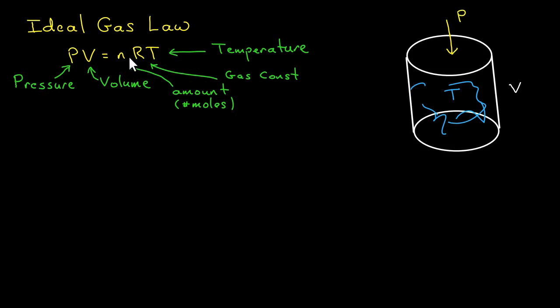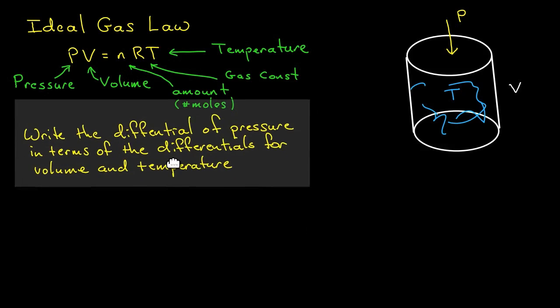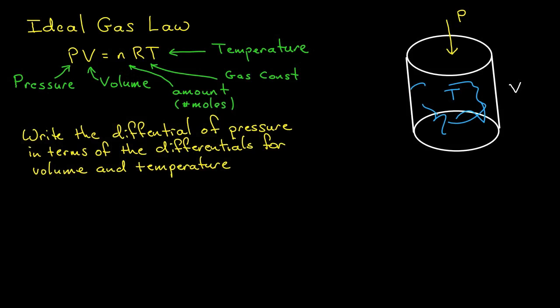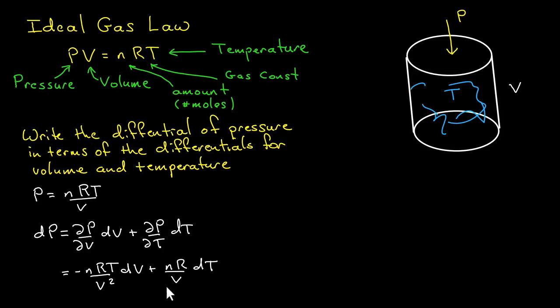There's a relationship between these, and the kind of question one might be asked is to understand the relationship between changes in pressure and volume and temperature in differential form. More precisely, write the differential of pressure in terms of the differentials for volume and temperature. A rather easy question - we solve for pressure strictly in terms of these other variables, then differentiate: dP = (∂P/∂V)dV + (∂P/∂T)dT.